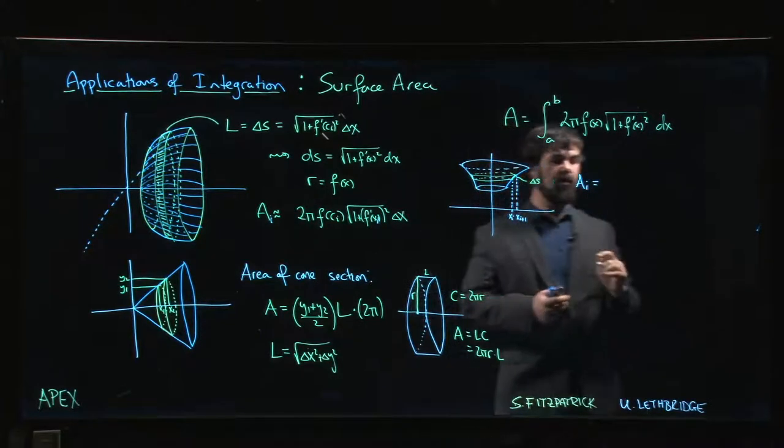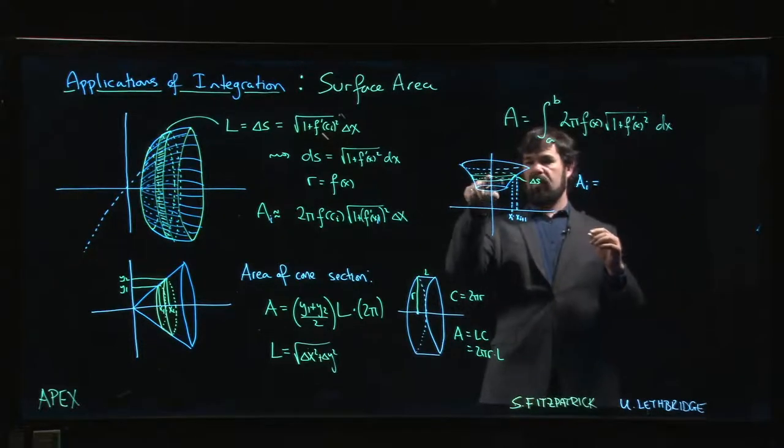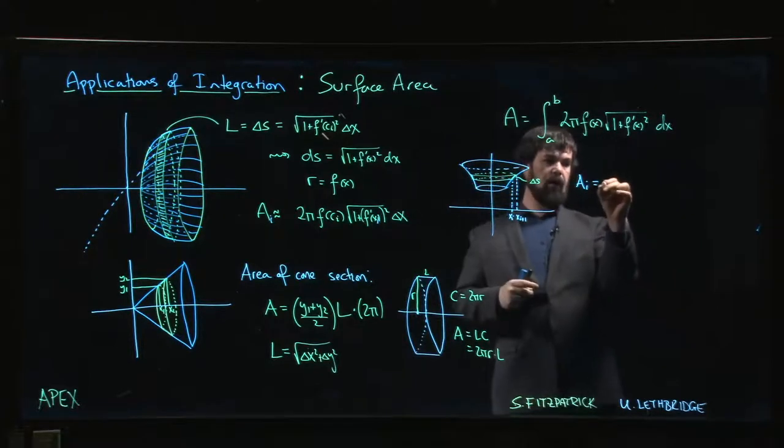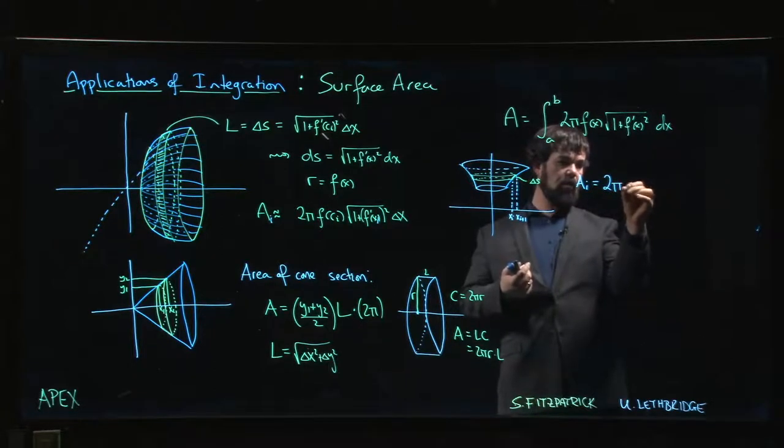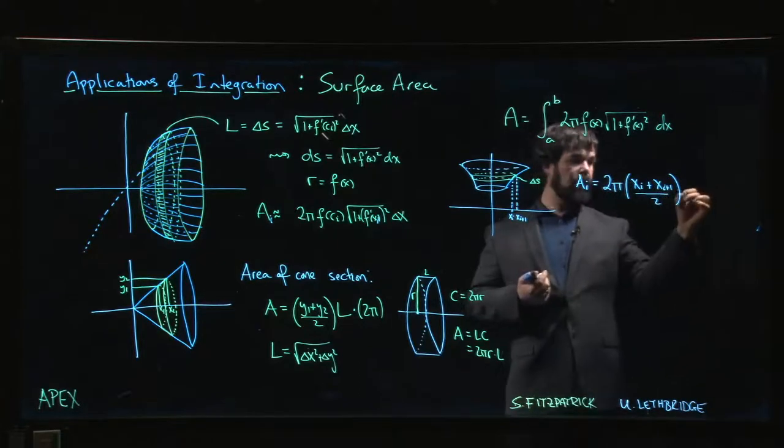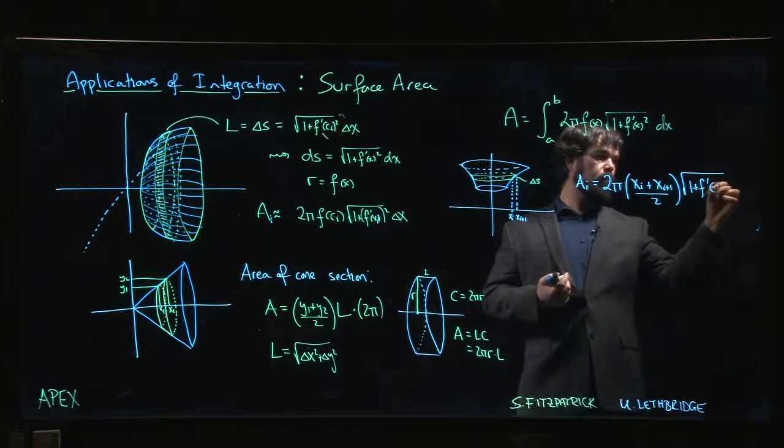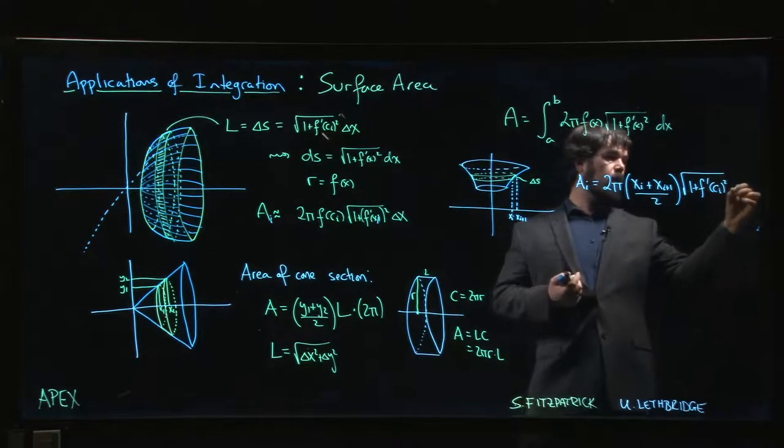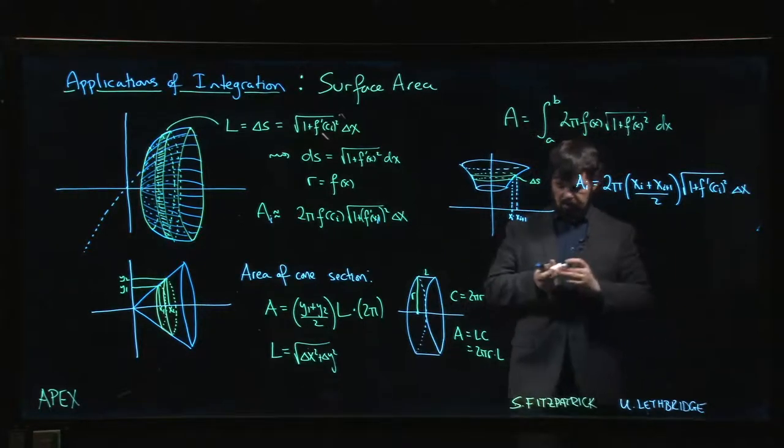The thing that changes now is the radius is given by X instead of Y. So 2π XI, or maybe somewhere in between. Maybe we want to write something like this for the average, and then times that length, the square root of 1 plus F prime of some CI squared times the delta X. So you get something that looks like that.